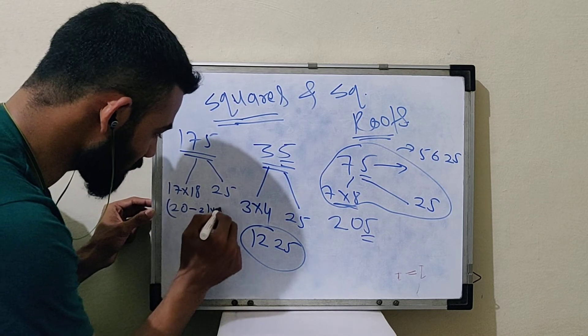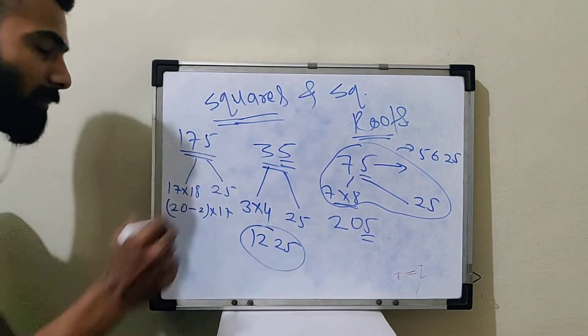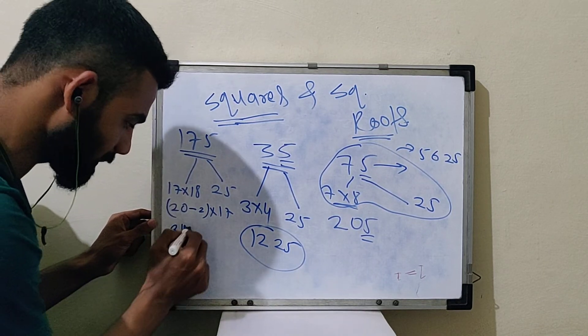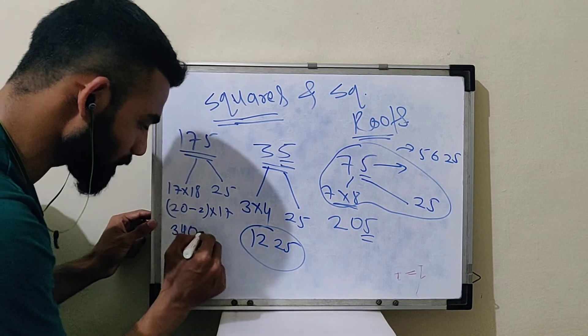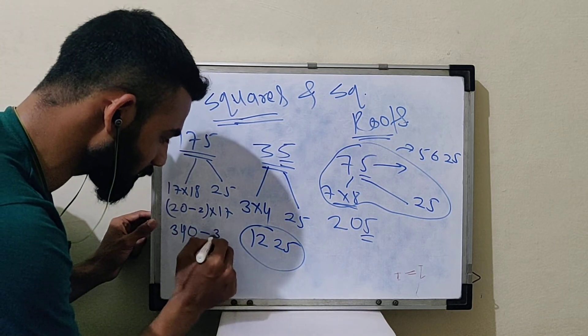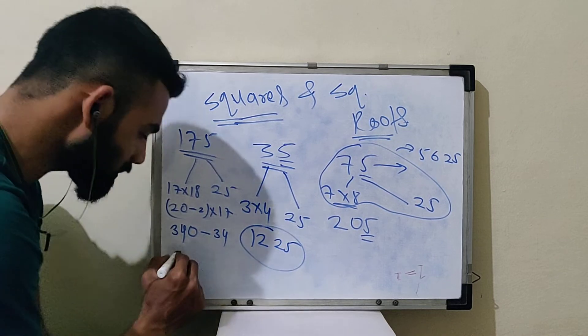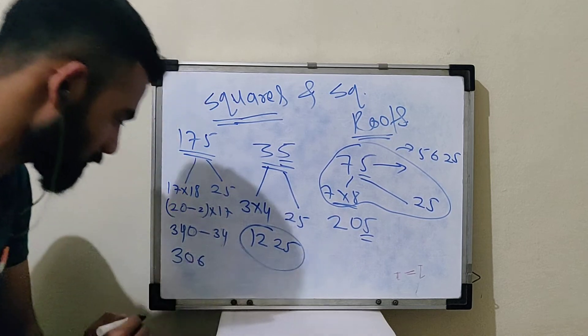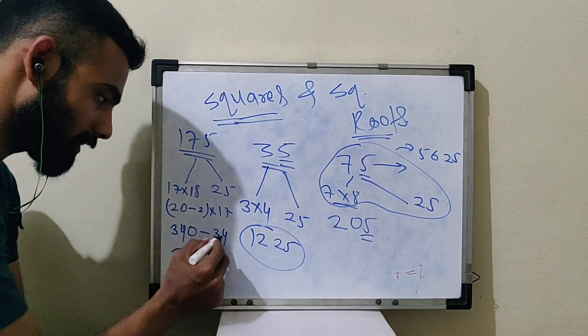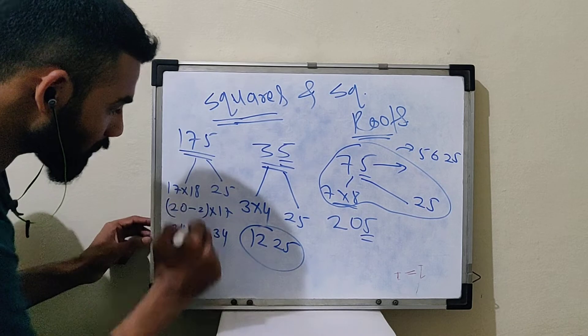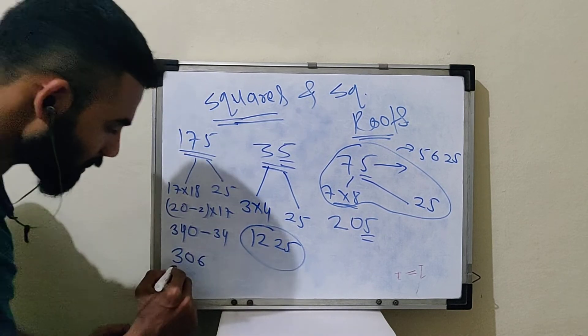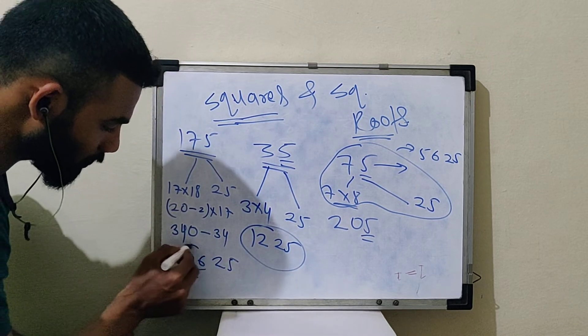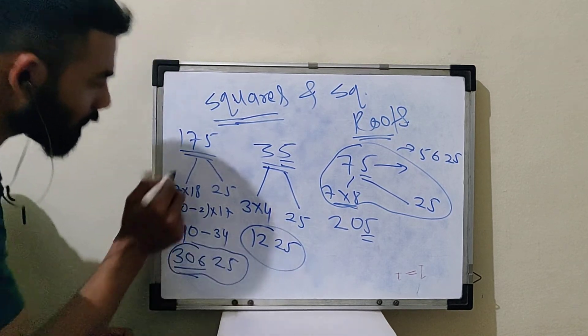For example, 17 multiplied by 18. We will write 20 minus 2. 17 multiplied by 20 minus 2. 17 multiplied by 20 is 340 minus 34 is 306. So this will be the square of 175.